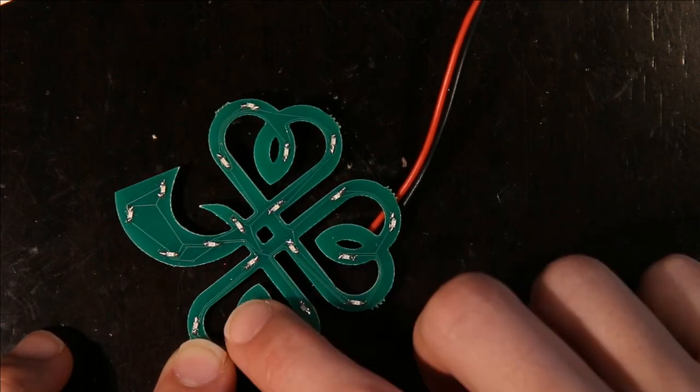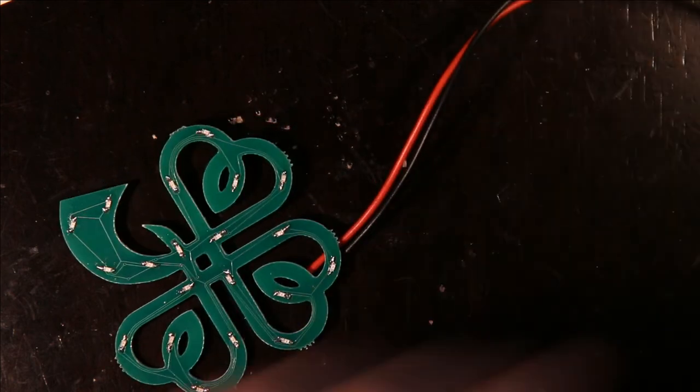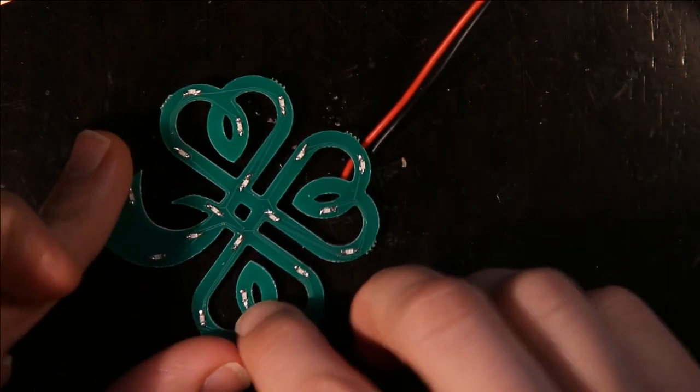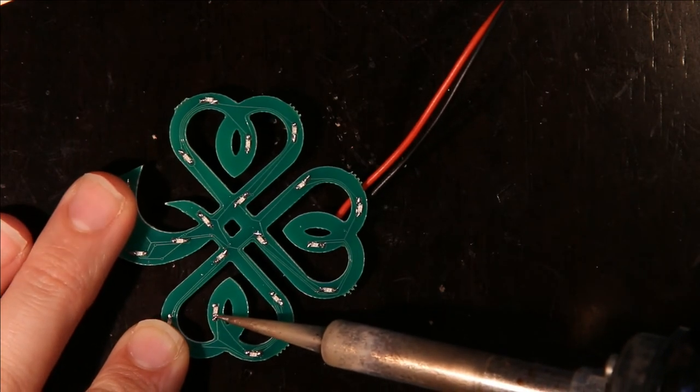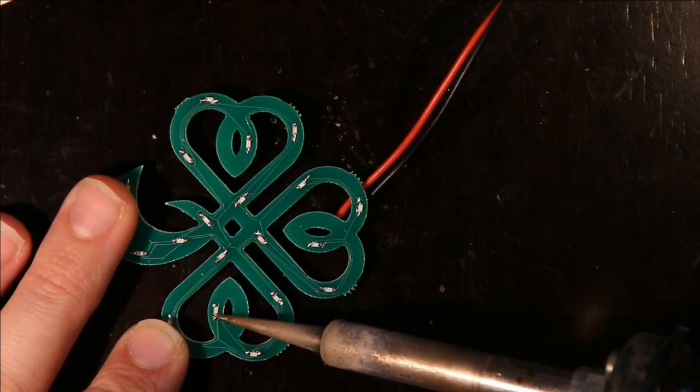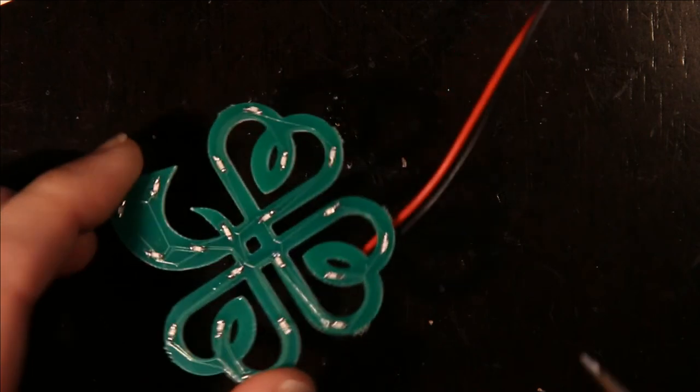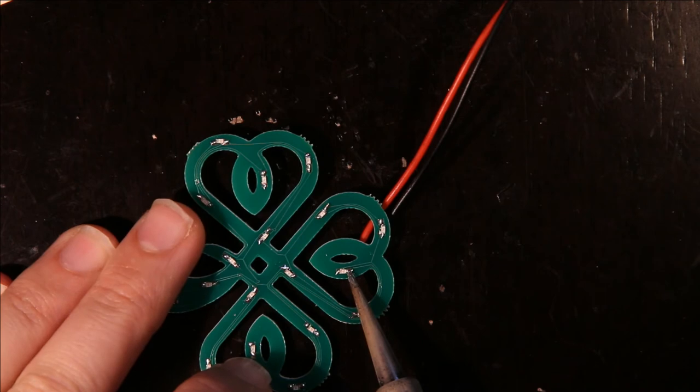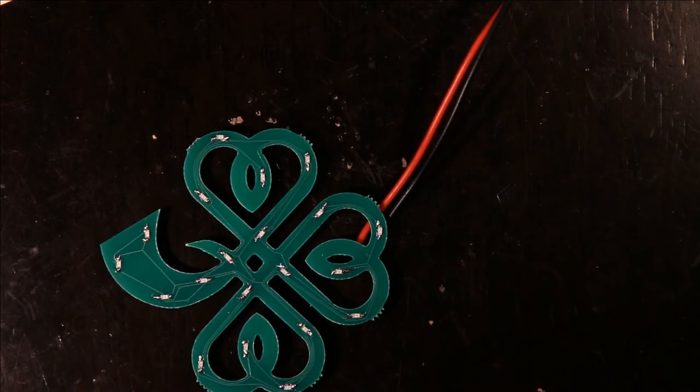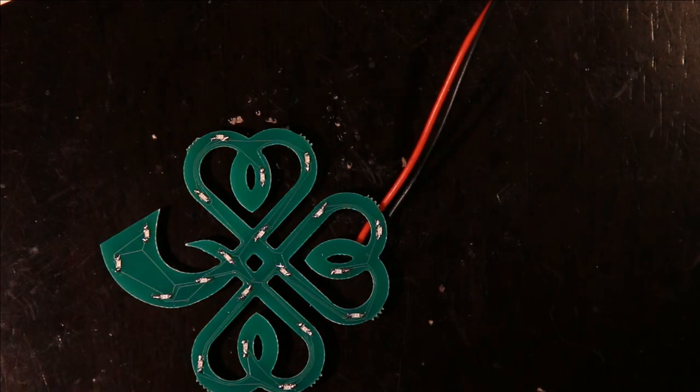So I turn this on and I notice these two LEDs don't turn on. So I just look at them and see how they're not connected. I can tell that this side isn't connected correctly, so I just reheat the solder and reflow it. Test and now it works. Same with this side, I just hold my soldering iron on there, it'll reflow. Test it and it works, and we have a fully functional shamrock.